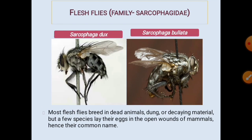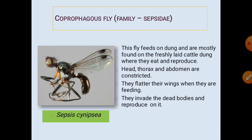Flesh flies from the family Sarcophagidae, order Diptera: most flesh flies breed in dead animals, dung, or decaying material, but a few species lay their eggs in the open wounds of mammals — hence their common name 'flesh flies.'